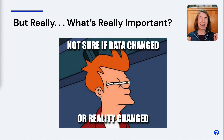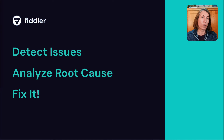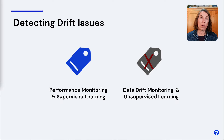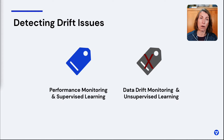At this point, you might ask: what's actually important? It's probably more important to understand how to detect issues — regardless of what we call them — how to analyze for root cause, and how to fix it. To detect drift, you need to know whether you have labels and have them in the time you need. If you do have labels, performance monitoring and supervised learning is the way to go. If you don't, or they're lagging, data drift monitoring and unsupervised learning are methods you can use.